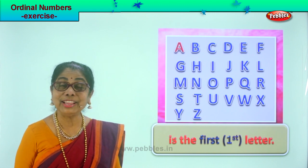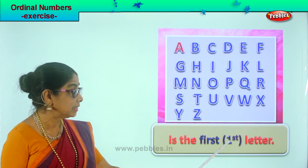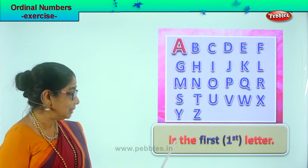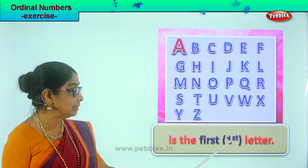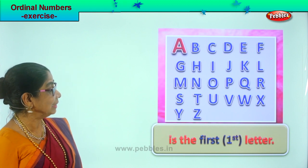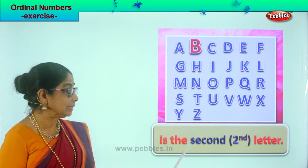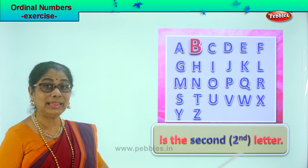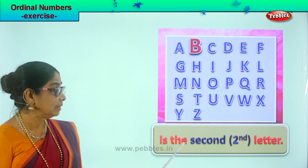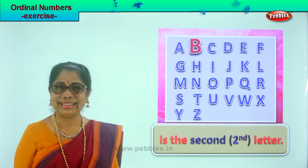We are learning ordinal numbers. Letter A is the first letter. You write 'first' and represent it as number one and ST — so A is the first letter. Next, let's take the second letter — letter B. B is the second letter. The representation is number two and ND.